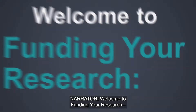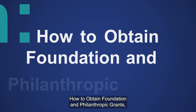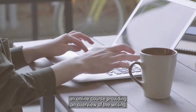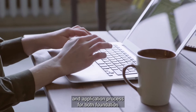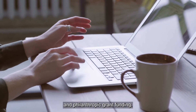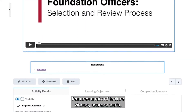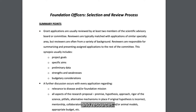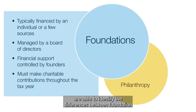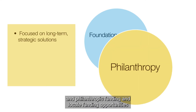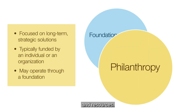Welcome to Funding Your Research: How to Obtain Foundation and Philanthropic Grants, an online course providing an overview of the writing and application process for both foundation and philanthropic grant funding. This eight-week course, led by researchers who have successfully applied for these types of funding, features a mix of lecture videos, assessments, and resources. By the end of the course, participants are able to identify the differences between foundation and philanthropic funding and locate funding opportunities and resources.